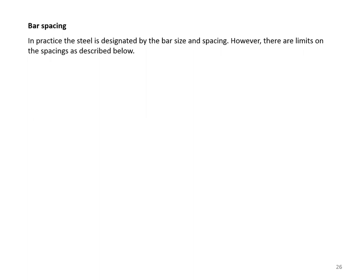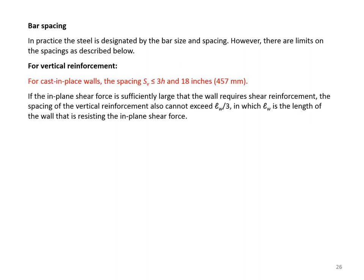Bar spacing: in practice, steel is designated by bar size and spacing, but there are limits. For vertical reinforcement in cast-in-place walls, spacing SV must be less than 3h and 18 inches, whichever is smaller. If in-plane shear force requires shear reinforcement, vertical bar spacing also cannot exceed LW/3, where LW is the length of the wall resisting in-plane shear.